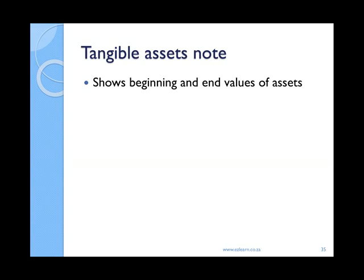Remember that all your other asset notes are simply a list of all the items that you have to include. It is only owner's equity and tangible assets which need to show all the movements. So to show how you got from the beginning to the end value, you will need to show the changes during the year.